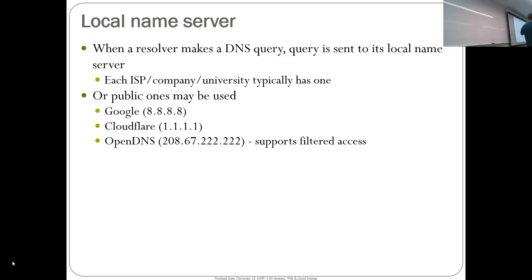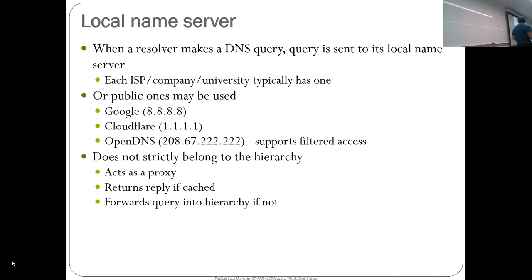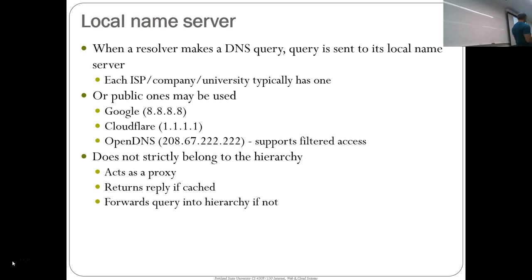Typically an ISP, company, or university has a local DNS server running. You can also use public ones like Google and Cloudflare, or OpenDNS — if you're a parent and you want filtered access to the names your kid surfs, they have a package managed service that says these domains are kid-friendly and these domains aren't, and you can block based on name lookup. These local name servers don't belong to the hierarchy of name lookups — they're just software that knows how to query the hierarchy, basically a proxy and proxy cache.